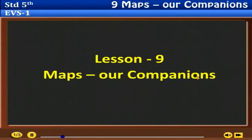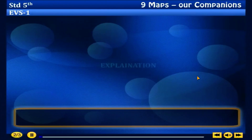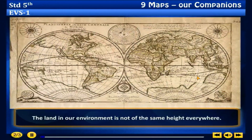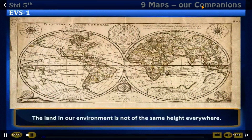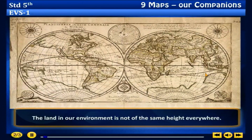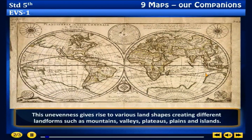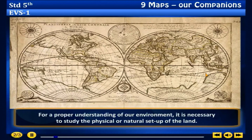Lesson number nine: Maps. The land in our environment is not of the same height everywhere. This unevenness gives rise to various landscapes, creating different landforms such as mountains, valleys, plateaus, plains and islands. For a proper understanding of our environment, it is necessary to study the physical or natural setup of the land.